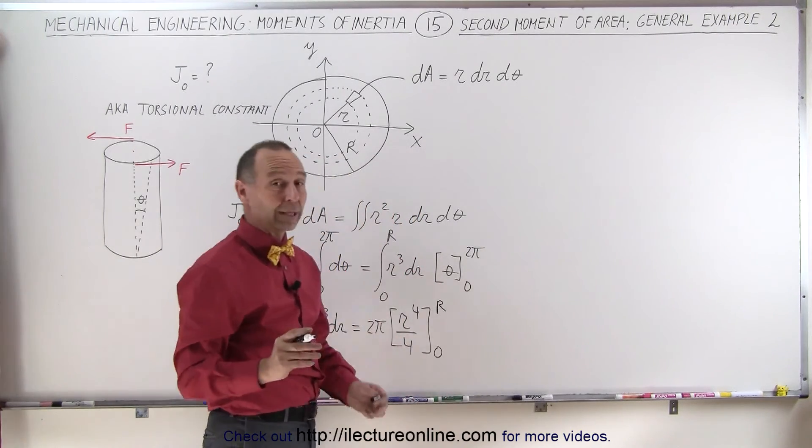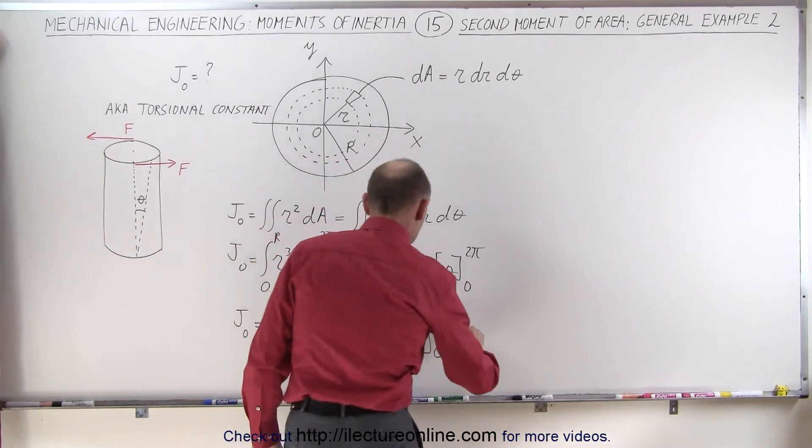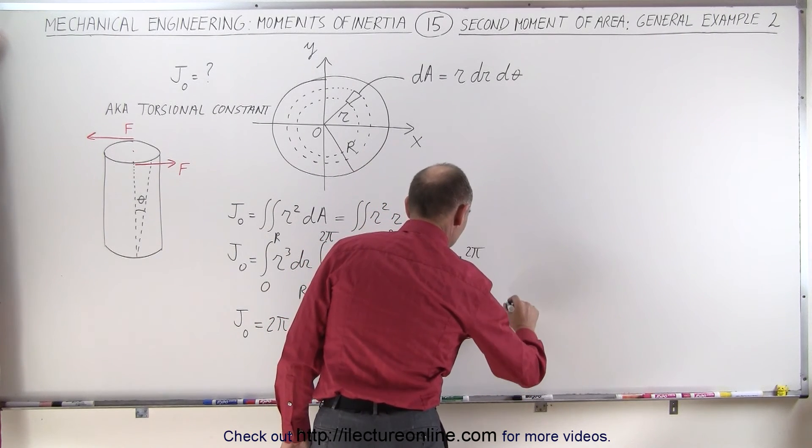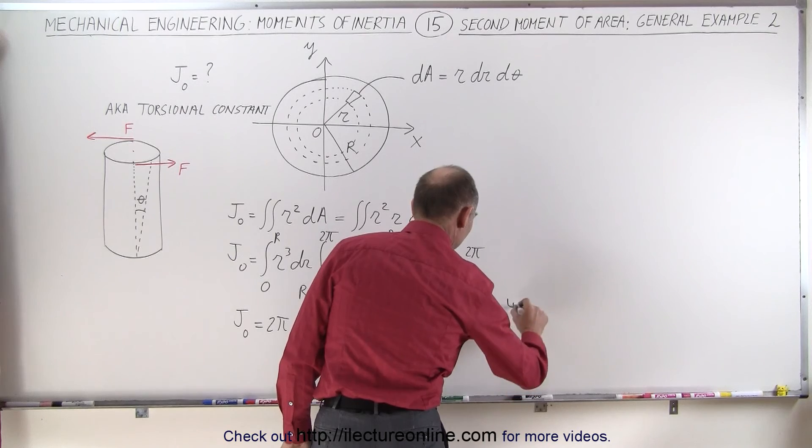Again, when you plug in the lower limit, you get nothing. Plug in the upper limit, you get two pi times the radius of the circle to the fourth power divided by four.